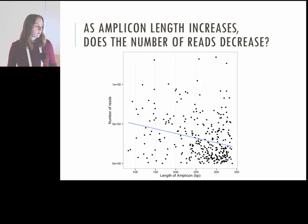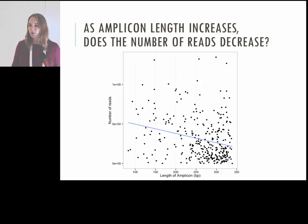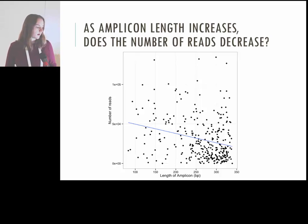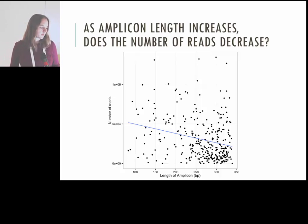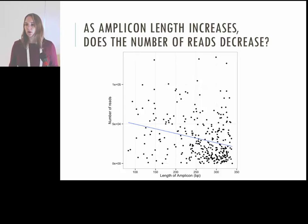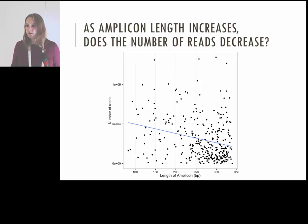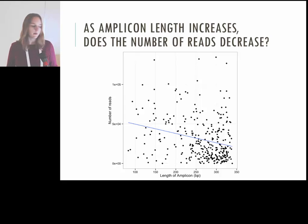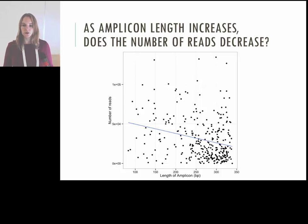One question we had was the relationship between amplicon length and number of reads — we were concerned about a potential bias toward smaller amplicons. We had done some tweaks to increase specificity and remove amplicons that were too short. As amplicons get longer, we do see fewer reads, although our largest amplicons still have coverage. We think the design is doing a pretty good job across amplicons, and we expect some presence-absence variation based on the nature of the maize genome.